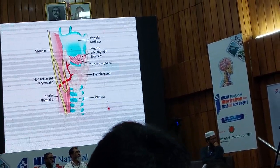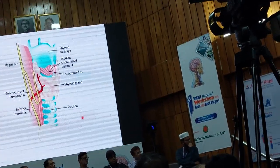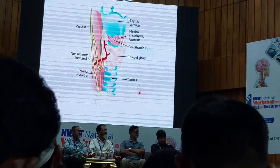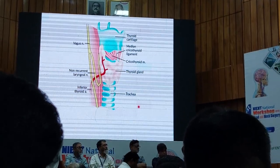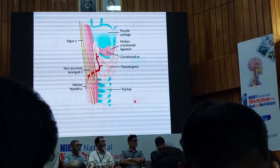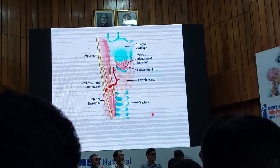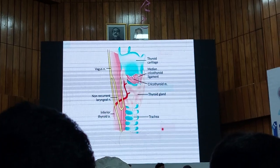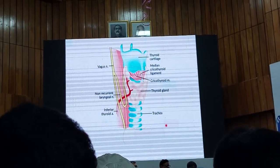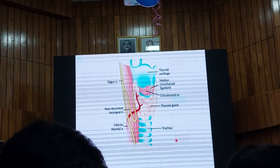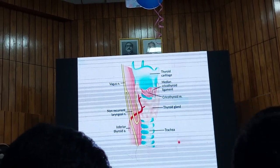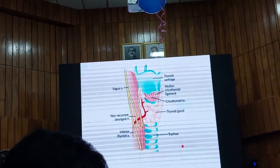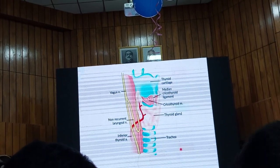On the right side, sometimes the recurrent laryngeal nerve is very rare — less than one percent. That time the nerve is not recurrent. That means the nerve arises in the upper part, not in the thorax. So that time if you find here the nerve is not recurrent, you have to encounter this situation. You should keep in mind that on the right side, the nerve may be non-recurrent.